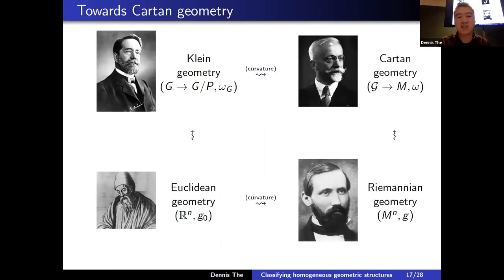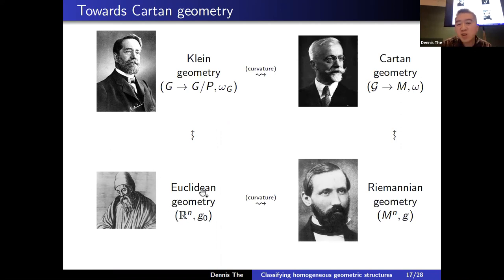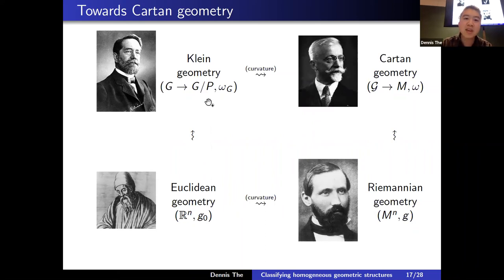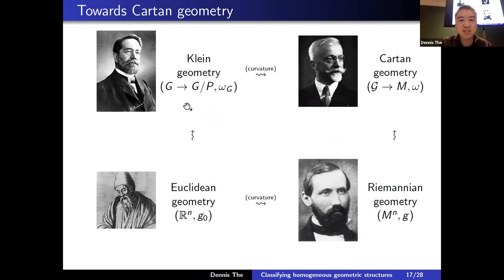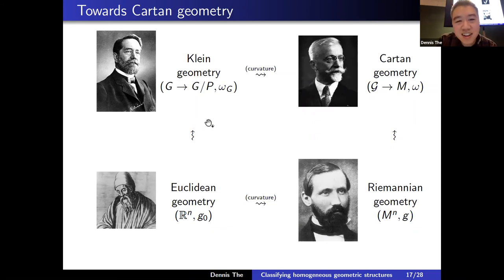Let me explain some ideas behind Cartan geometry. There is a nice diagram of ideas at the beginning of Richard Sharpe's book. There are two well-known generalizations of Euclidean geometry: on one hand, focus on symmetries — Euclidean group mod orthogonal group — the Kleinian perspective. On the other hand, Riemannian geometry, which in general is not homogeneous at all. Cartan geometry is the common generalization of these two.